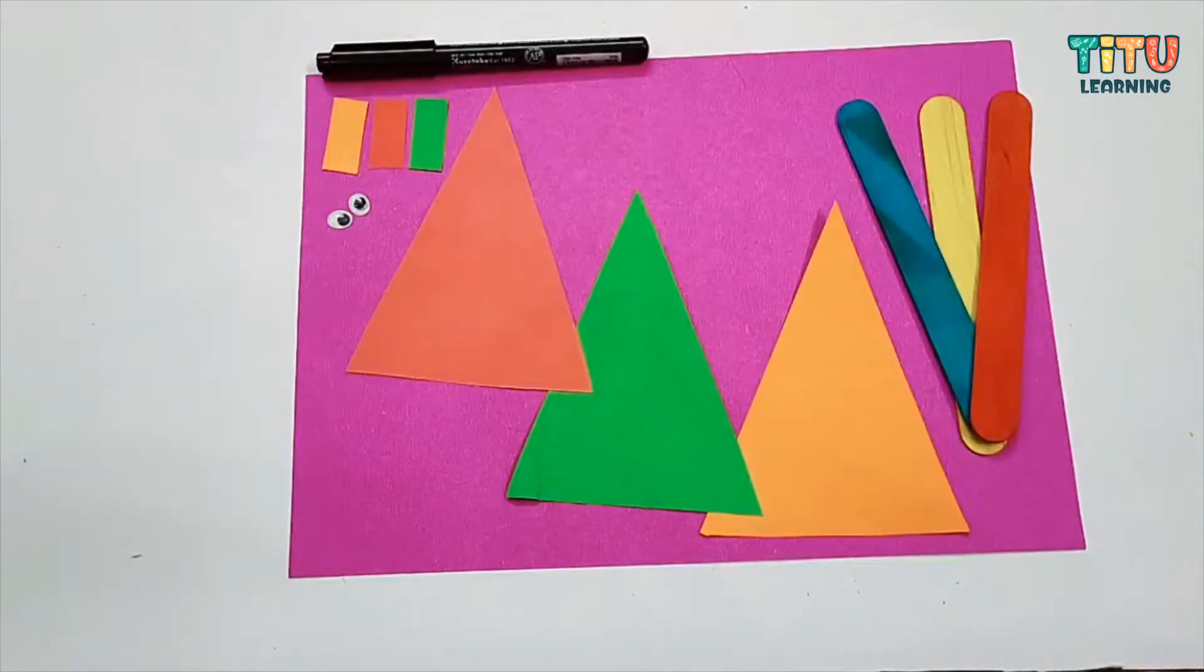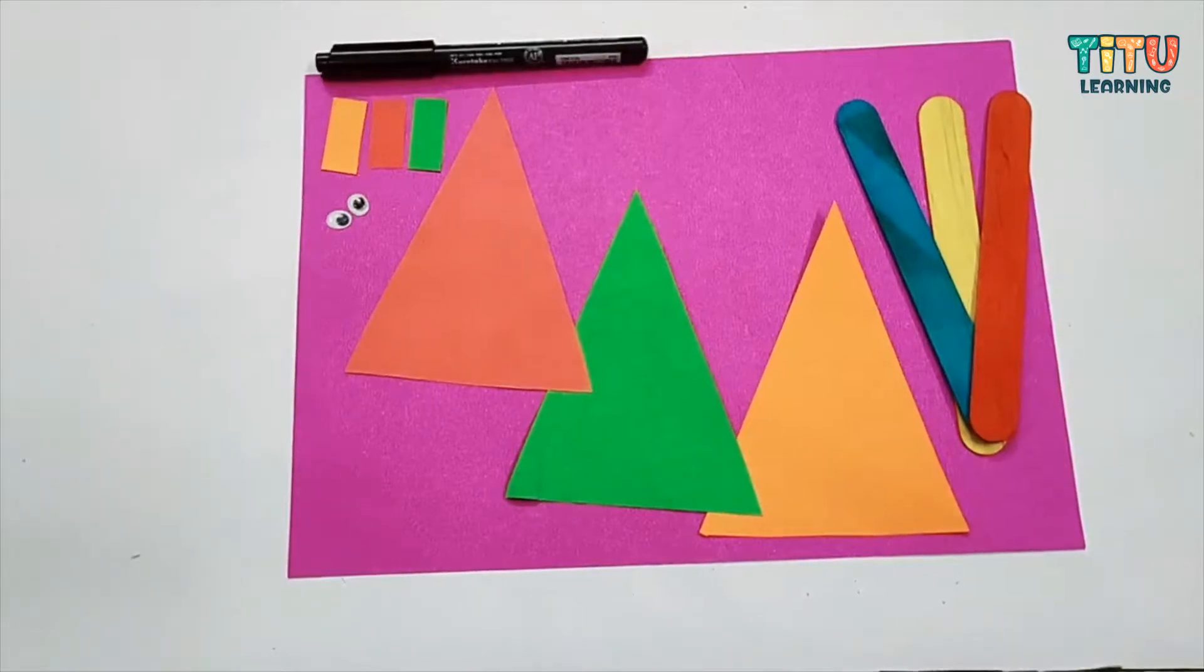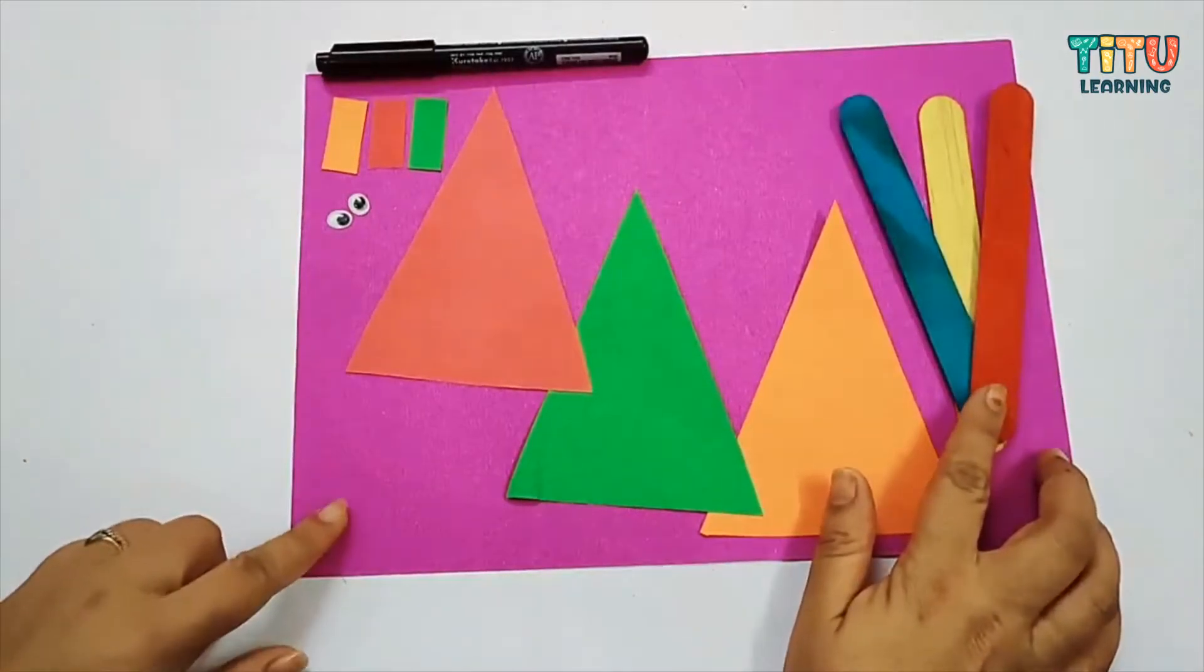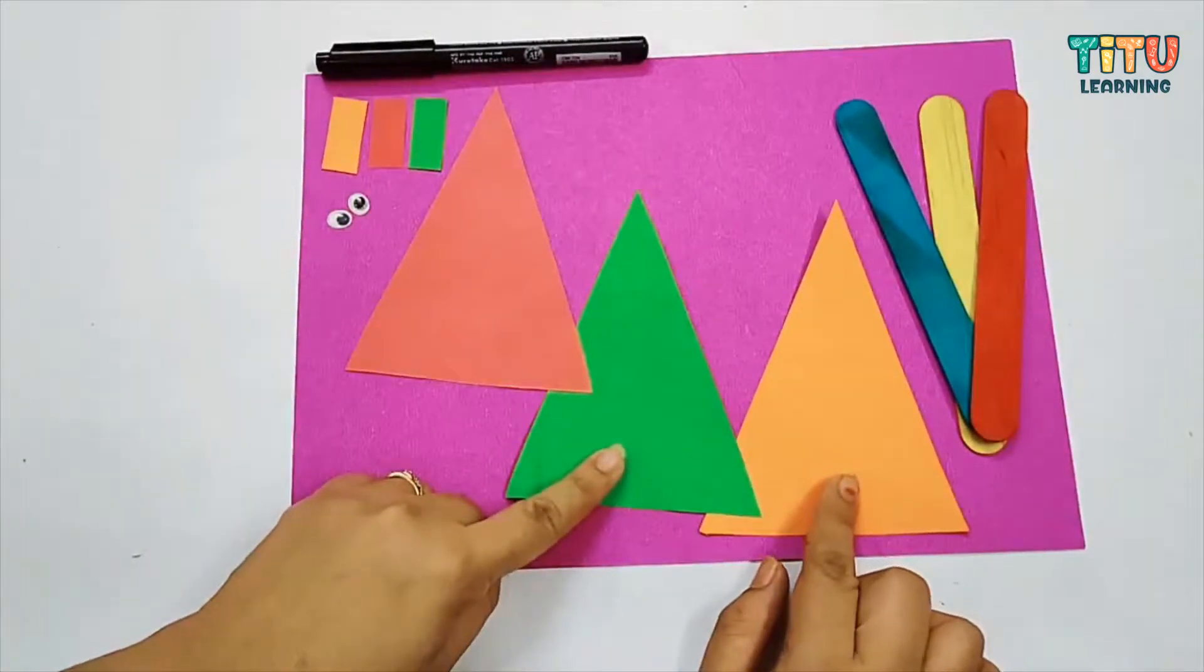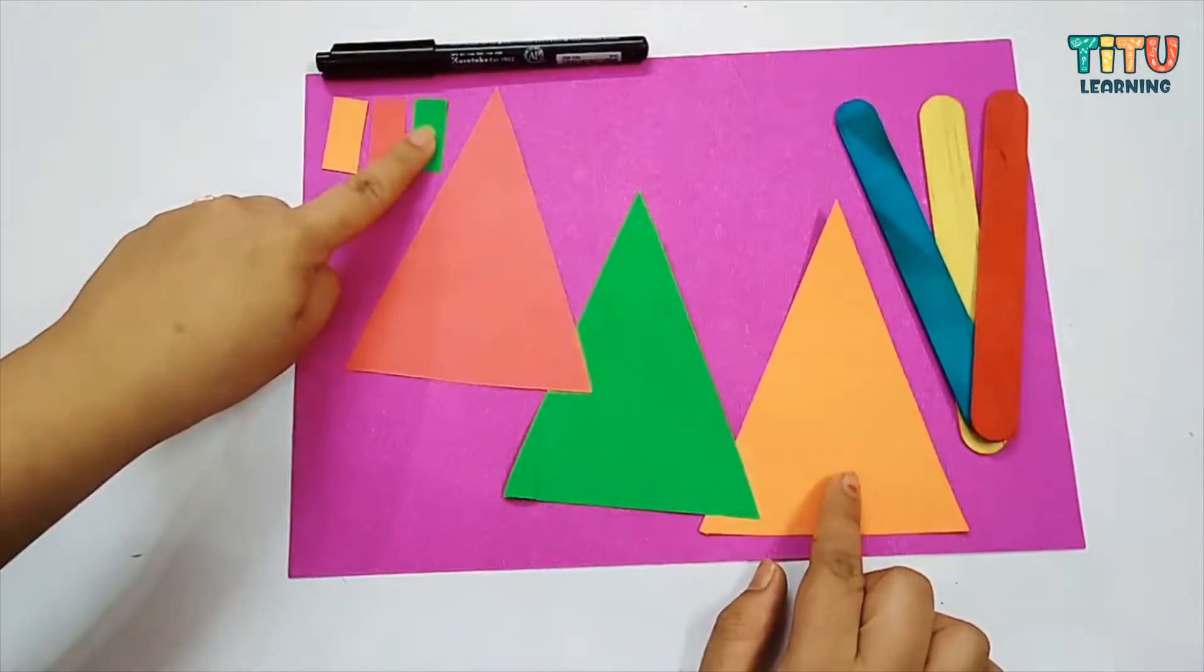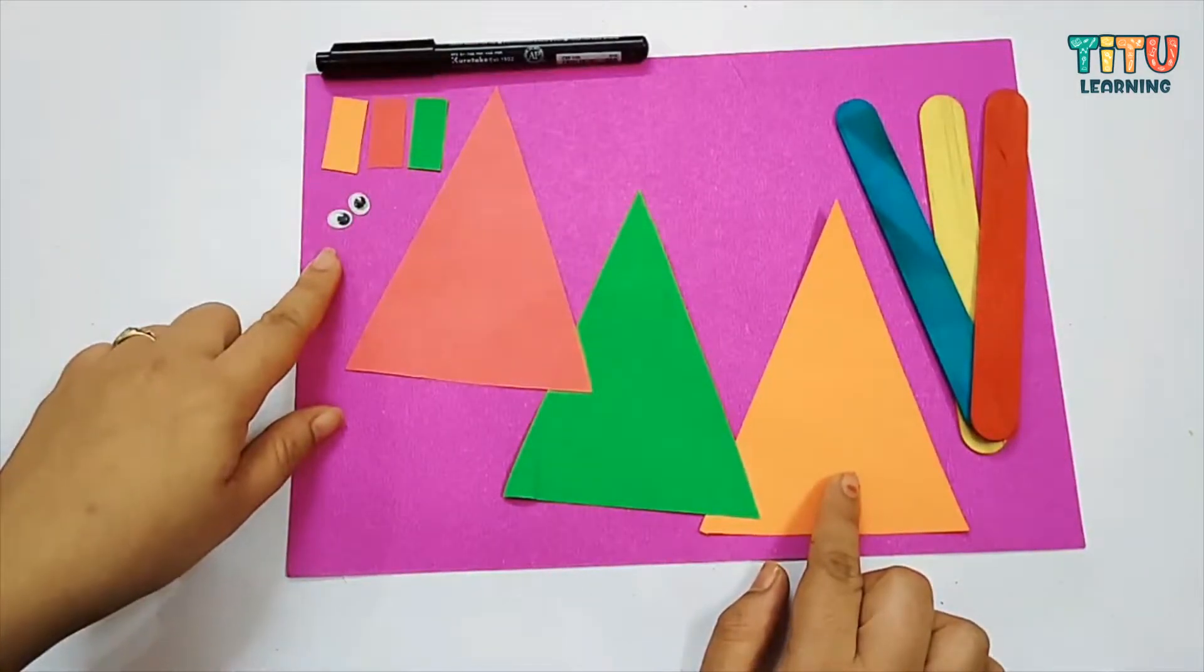Hi kids, so today in this session I am going to make popsicle stick superheroes. For this you need materials like some colorful popsicle sticks, three to four cutouts, colorful cutouts in a triangle shape, cutouts in rectangle shape, and googly eyes.